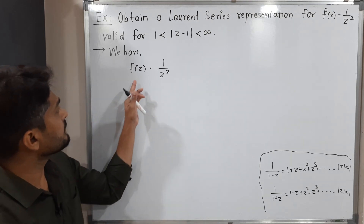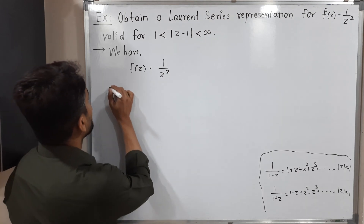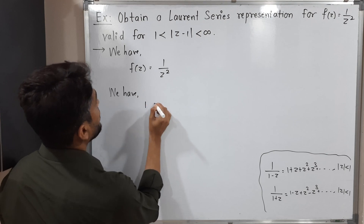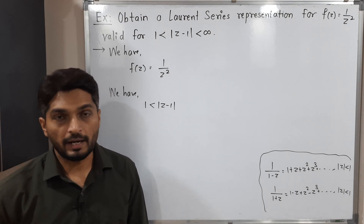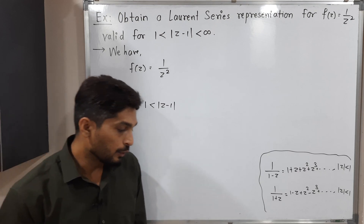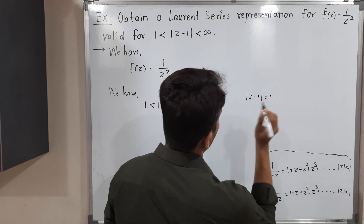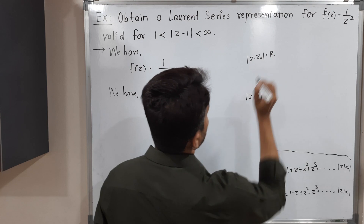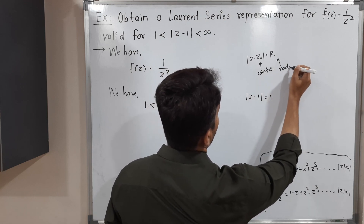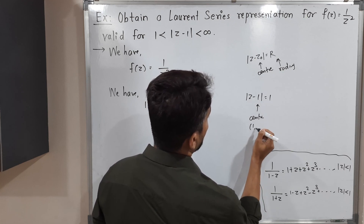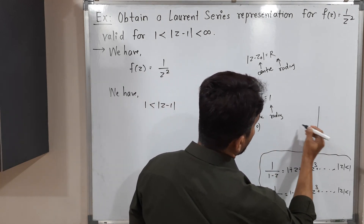Our function is f(z) = 1/z², and the given domain is 1 < |z - 1| < ∞, meaning a finite value up to infinity. To understand its geometry, we replace the inequality by equality: |z - 1| = 1. Using the formula |z - z₀| = R for a circle with center z₀ and radius R, we have center at z₀ = 1, i.e., (1, 0) since there is no imaginary part, and radius R = 1.